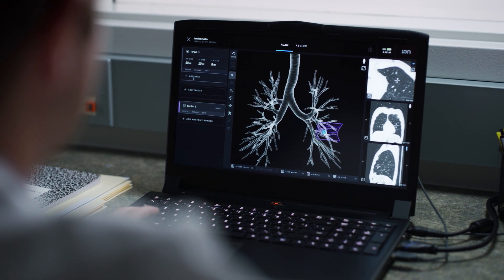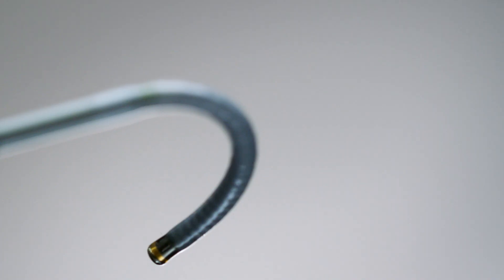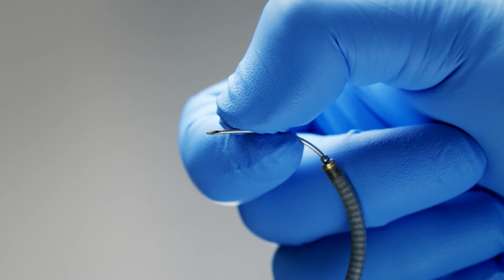With ION's PlanPoint software and the catheter's ability to articulate 180 degrees in any direction, and our flexision needle, we're able to access all 18 segments of the lung and tumors even outside of the airway.